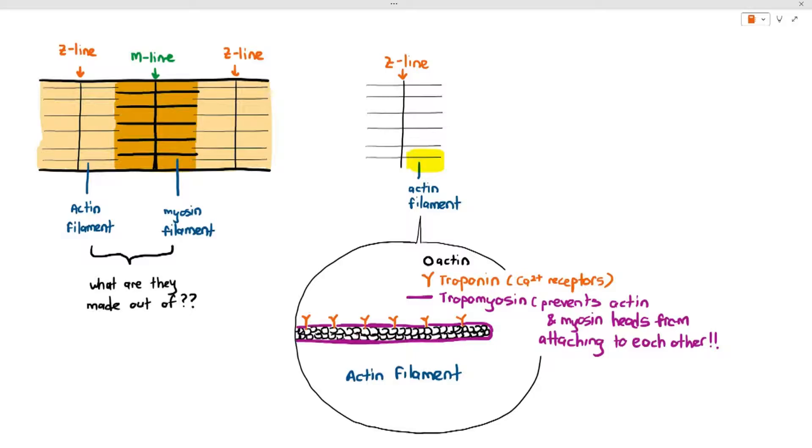For now the actin filament itself is made out of actin proteins joined together, it's made out of something called troponin and also tropomyosin. Sometimes in the exam the question asks you to describe the actin filament. You can say the actin filament is a thin filament, that it's made out of actin proteins, troponin, and tropomyosin.